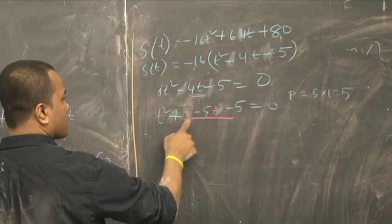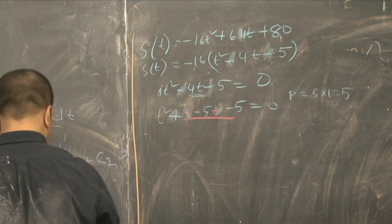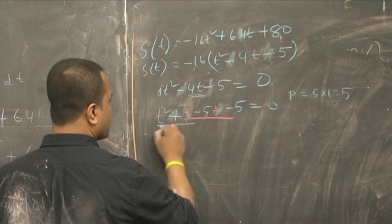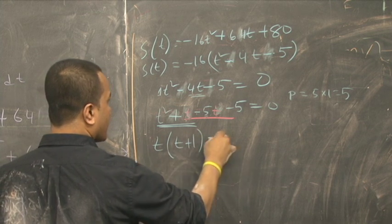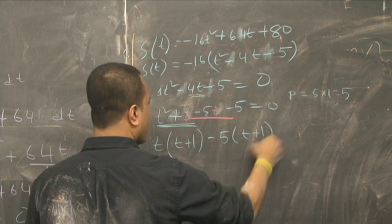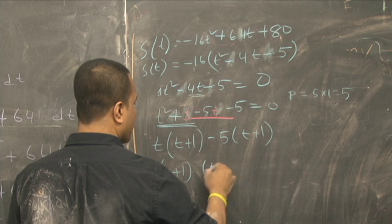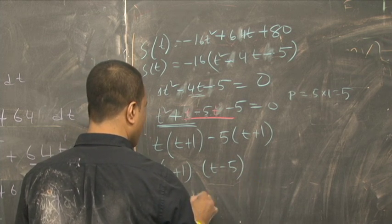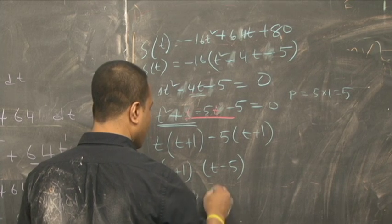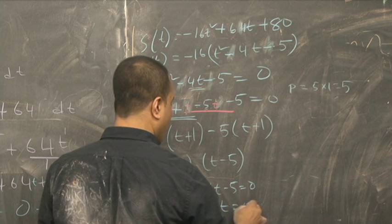What is the GCF between the two? Just t. t times t plus 1, and minus 5 times t plus 1. So t plus 1 equals 0, so t is negative 1, and t minus 5 equals 0, so t is 5.